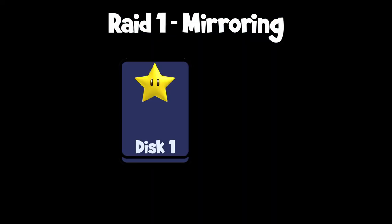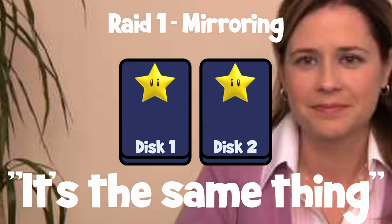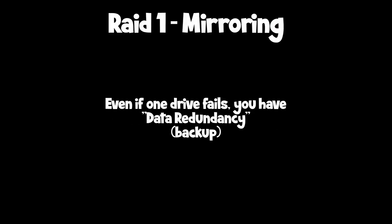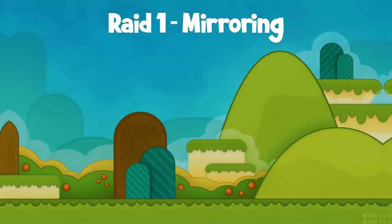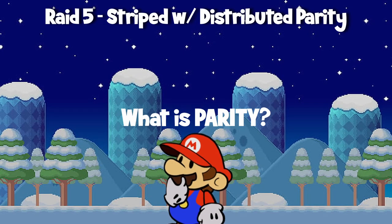RAID one — mirroring. This configuration is used to provide data redundancy by creating a mirrored copy of the data on multiple disks. RAID one has a read performance benefit, but write performance is limited to the speed of a single disk. Consider this like Mario and Luigi printing a smaller treasure map but copying it so both of them have one. This provides backups, so if one is lost they still have a copy, but the treasure map doesn't have as much data — similar to how drives in RAID one are copied so both drives have the same data.